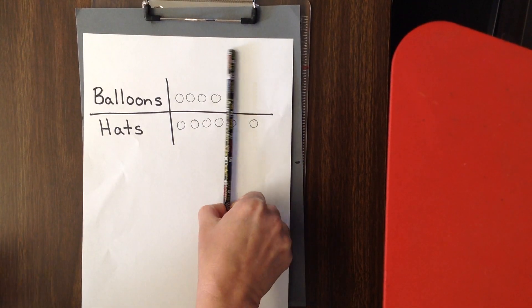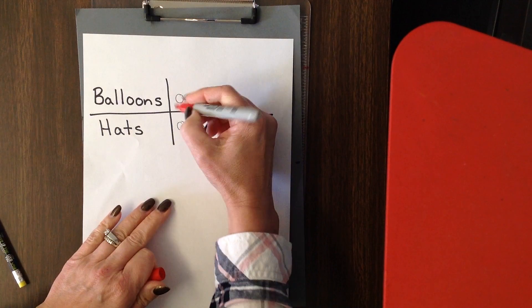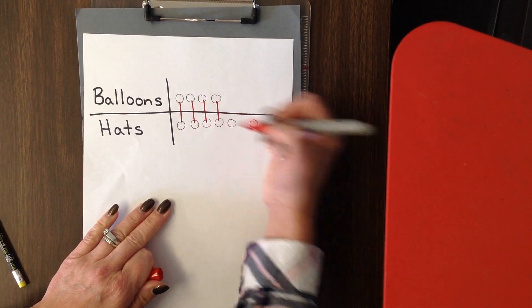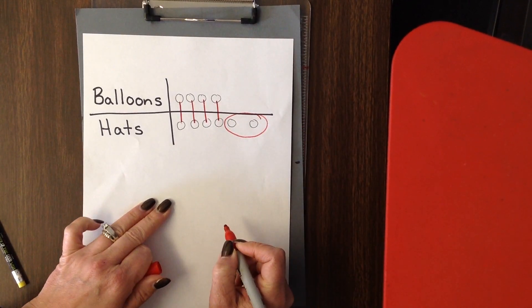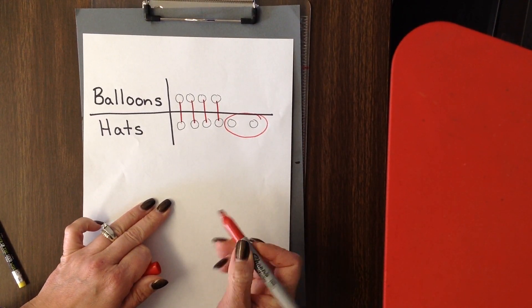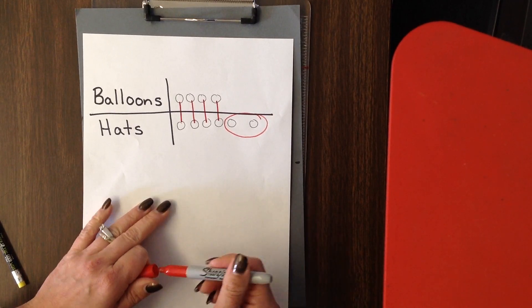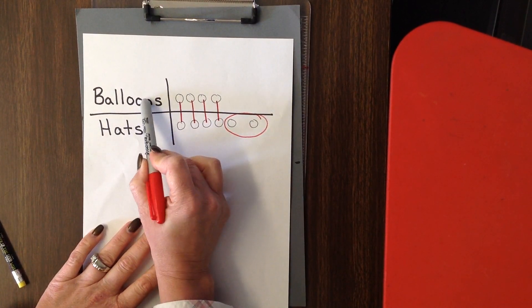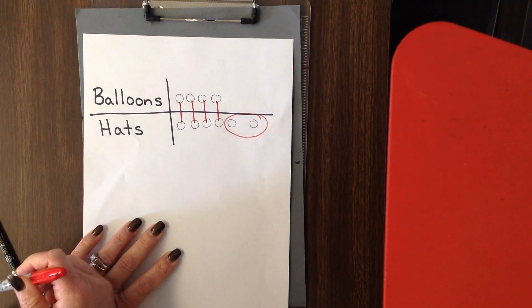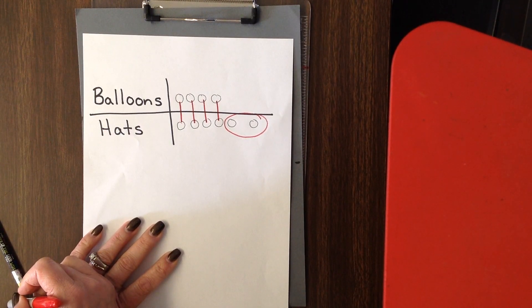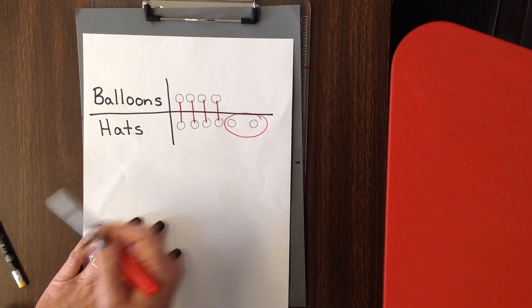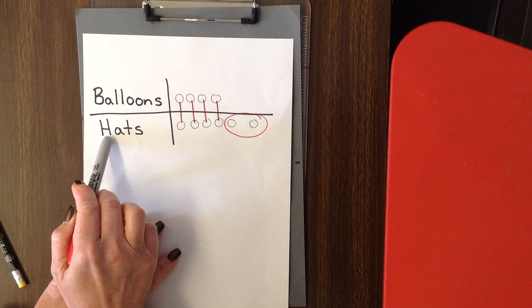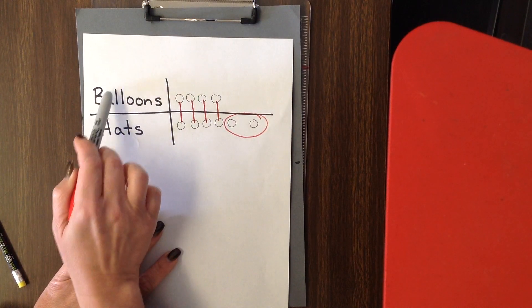Another way that you can see this is by actually drawing the matches — you can see match to match, here to here, here to here. You would see that there are two hats that are left over. So we can say this a couple of ways. We can say that there are two more hats than balloons. We can also say it using the word fewer — we call these compare words: more and fewer. So we could say that there are two fewer balloons than hats.